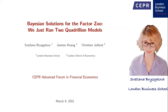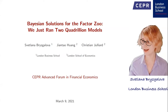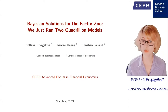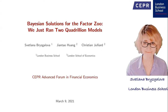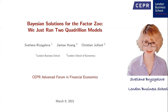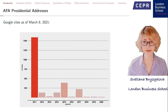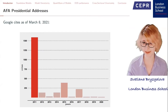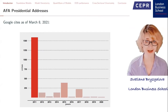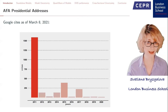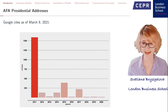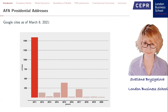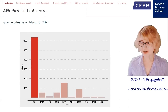Thank you for the invitation. It's a pleasure to present this paper, co-authored with Christian Julliard and Jan Tao Huang, a very bright PhD student from LSE. Every year at the American Finance Association meeting, the current president delivers the presidential address identifying important areas of research. On the graph here, you see the number of Google citations for each of these addresses over the last ten years, updated as of March 8th. The one from 2011 clearly stands out.